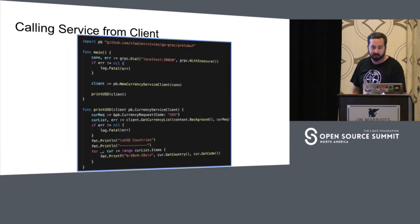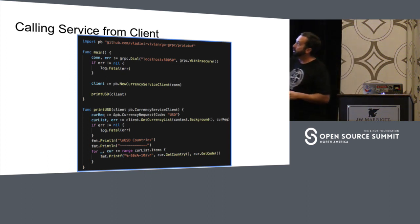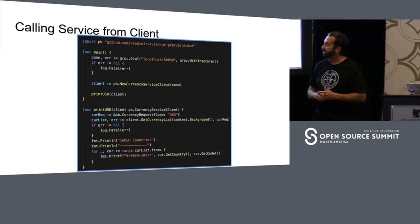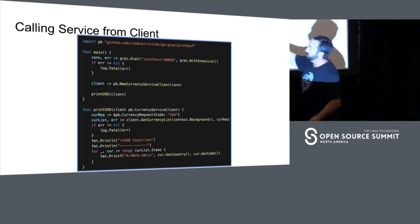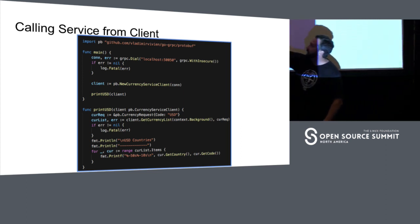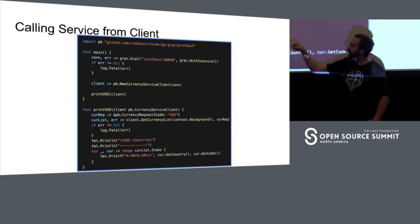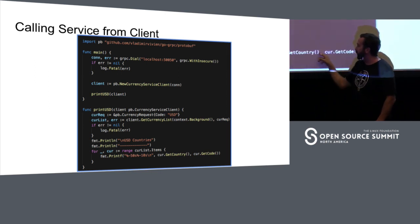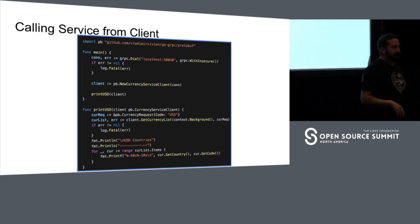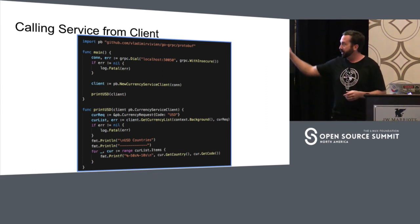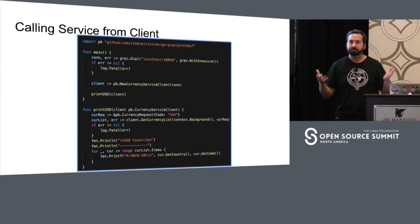When called from the client, here's what it looks like. We've got a runnable program; at the top you've got a dial statement specifying the endpoint hosting the gRPC service. You create a client by passing the connection in, then pass the client to the print USD function. As a client, you execute the remote GetCurrencyList function, get the results, range through all the items, and spit out the information. Pretty simple: the server implements the function, the client uses the generated stubs and makes use of the data, ranges through it, and prints the results.